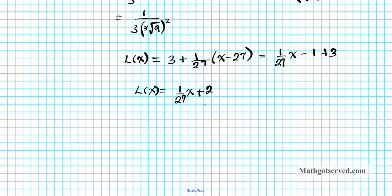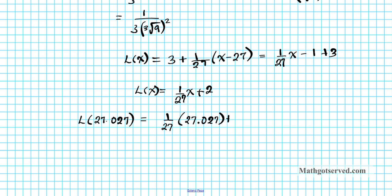Now what we're going to do next is use this linearization to find the cube root of 27.027. So we want to find the linearization at 27.027. This will be equal to 1 over 27 times 27.027 plus 2.